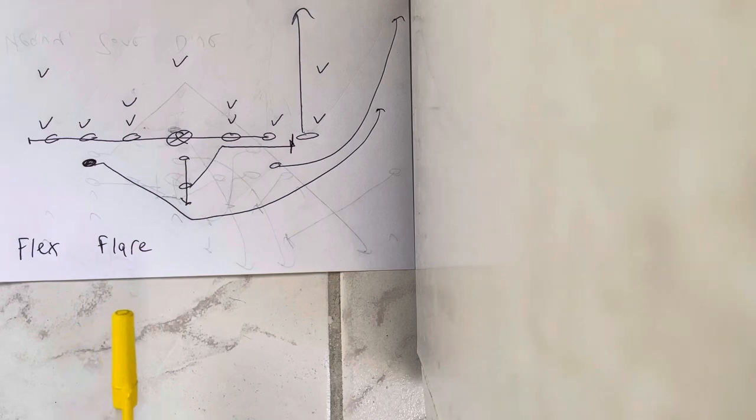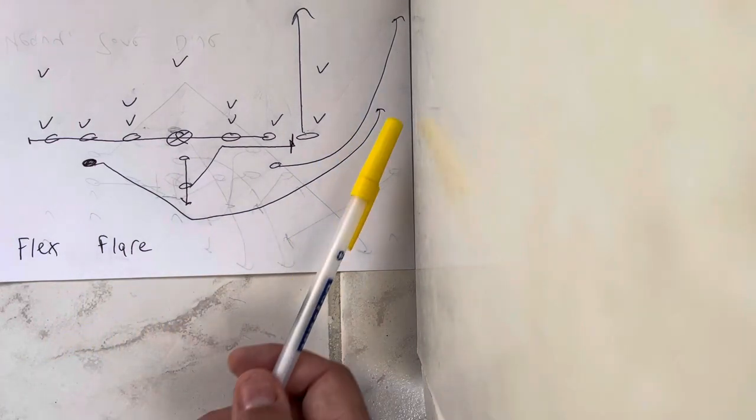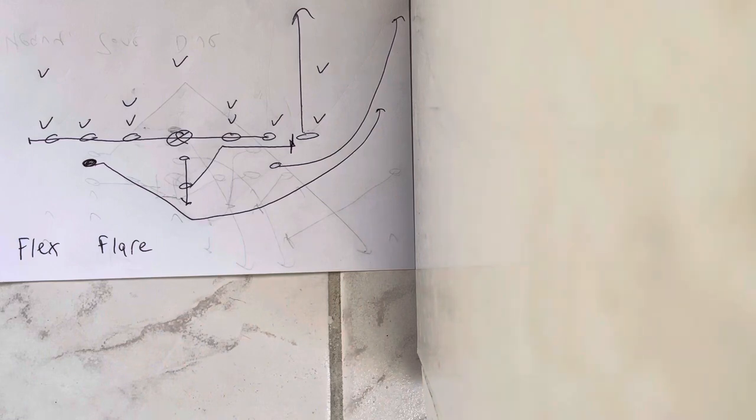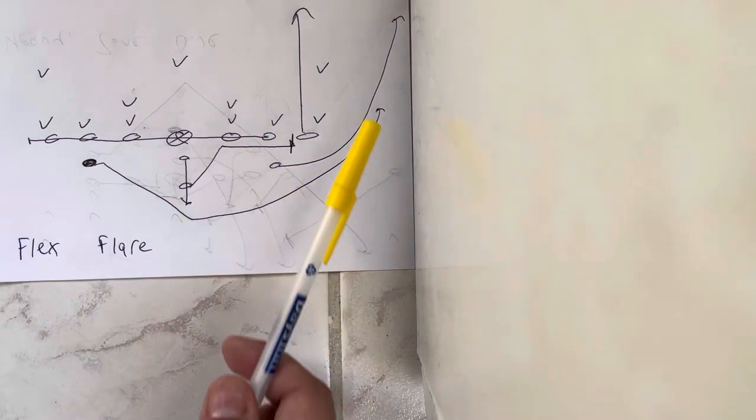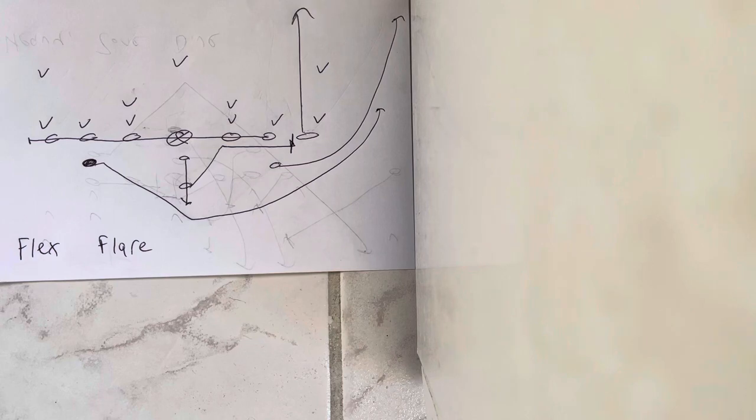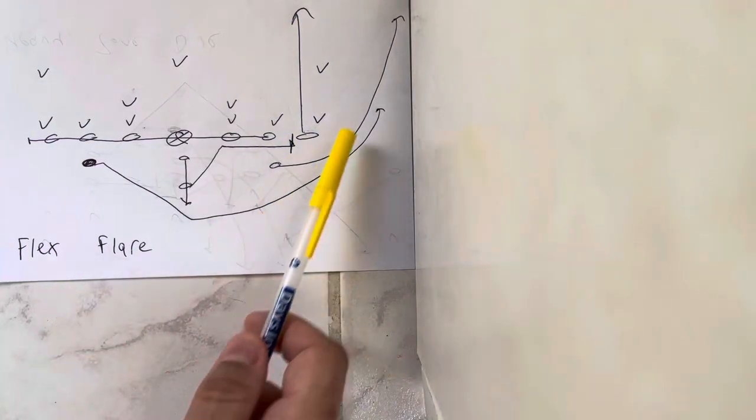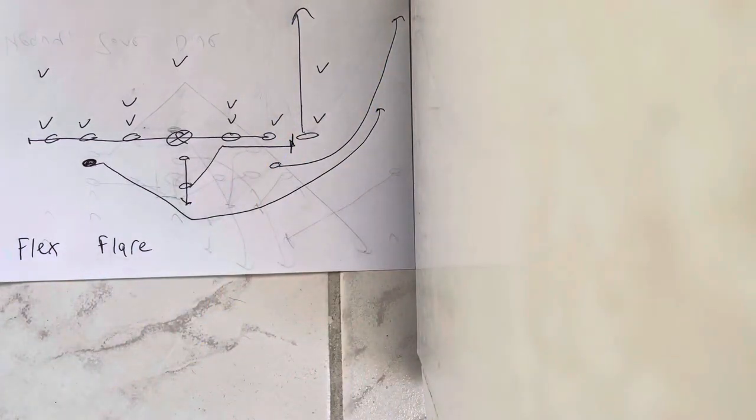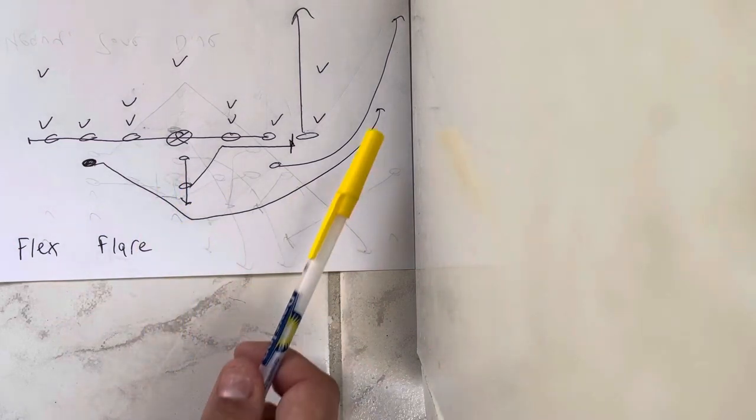So basically what happens is you're going to put this guy in a situation where they're not covering the flat, so you're going to throw the ball where he's supposed to be. So you've got a vertical and a wheel, which is the routes you would run on triple pass on a double flex. Now you've got the flare with seven in protection, and the quarterback on the fifth step throws the flare.